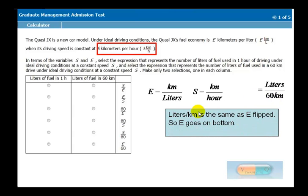Well, this is the same thing. So liters per kilometer, you want liters on top, which means you have to flip E. And so then the E goes on the bottom, and you end up with something like liters over kilometer.